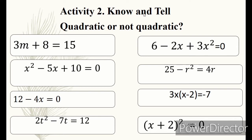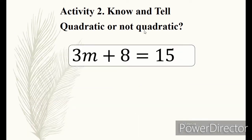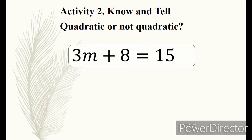Activity number 2 is entitled Know and Tell. Tell whether it is quadratic or not quadratic. The equations are: 3m plus 8 equals 15; 6 minus 2x plus 3x squared equals 0; x squared minus 5x plus 10 equals 0; 25 minus r squared equals 4r; 12 minus 4x equals 0; 3x(x minus 2) equals negative 7; 2t squared minus 7t equals 12; x plus 2 quantity squared equals 0. 3m plus 8 equals 15 — it is not quadratic, because it is on the first degree, which is a linear equation.